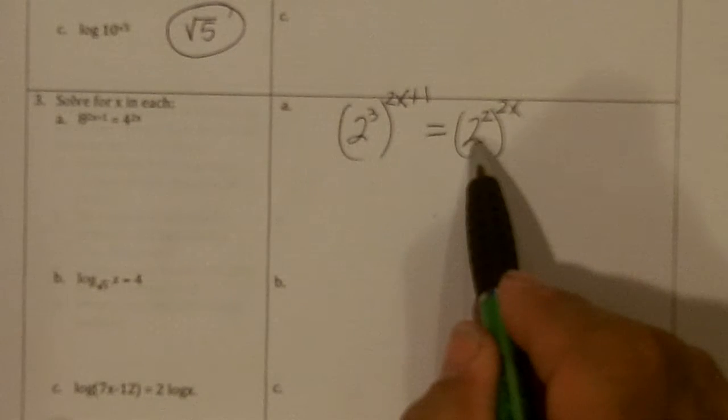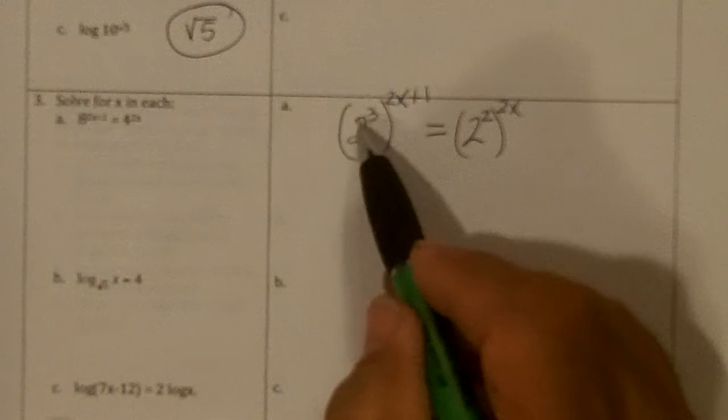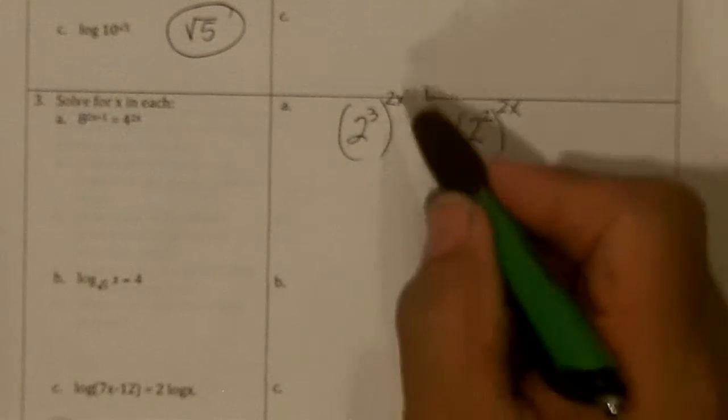So since the bases are now both 2, the powers must be equal. And when you get a power to a power, you multiply.